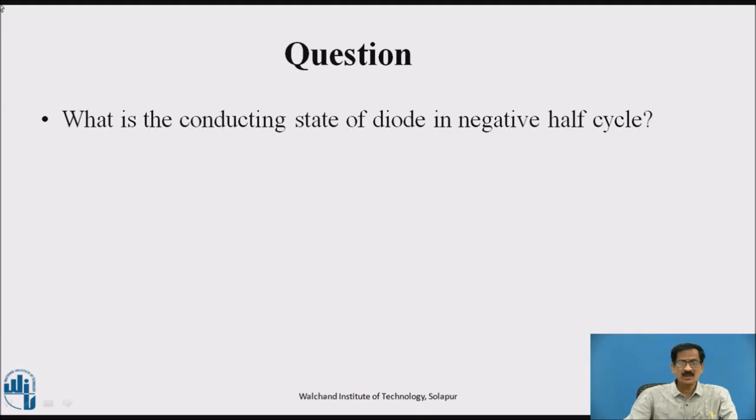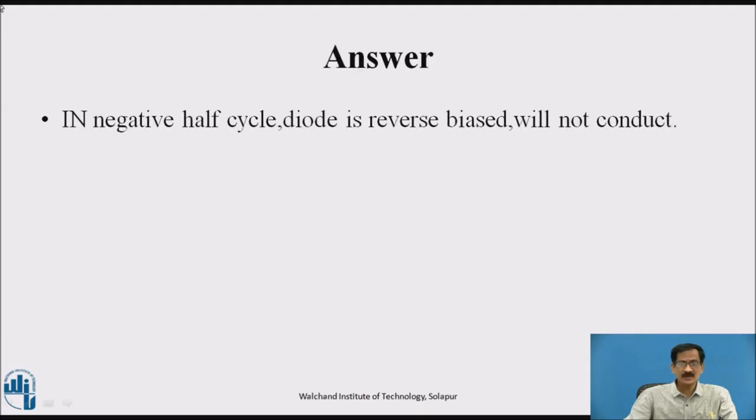What is the conducting state of the diode in negative half cycle? In negative half cycle, the diode is reverse biased, so it will act as an open switch and will not conduct.